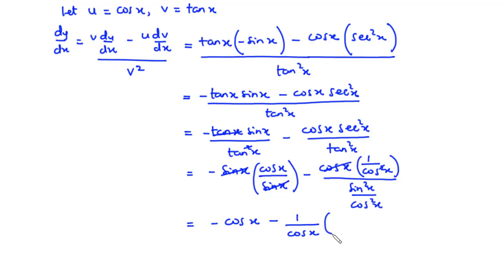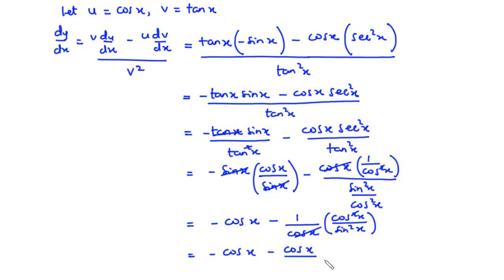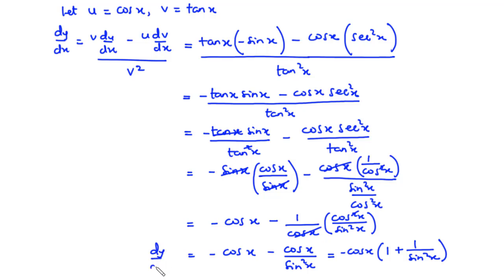For the second term, multiplying 1/cos(x) by the reciprocal of sin²(x)/cos²(x) gives cos²(x)/sin²(x). After cancellation, we have minus cos(x) divided by sin²(x). We can factor out negative cos(x), giving dy/dx equals negative cos(x) times the bracket one plus one over sin²(x).